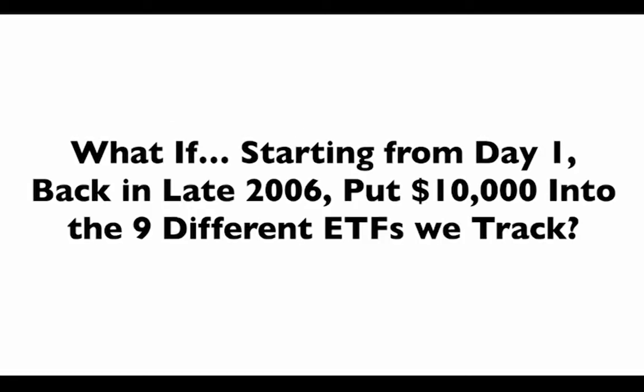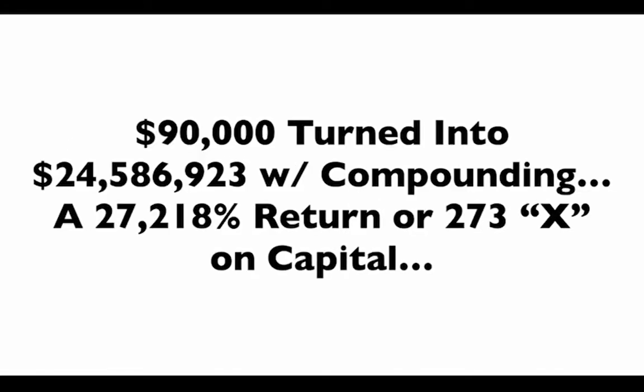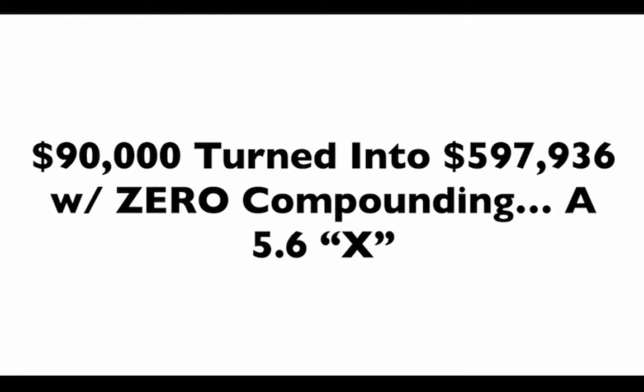Here's the result. Going back to late 2006 when we launched this system, if you put $10,000 into each of the nine different ETFs — DIA, SPY, QQQ, Gold, Materials, Oil — that's $90,000 total. With compounding, $90,000 would have turned into $24.5 million, a 27,000% return or 273X on capital. Even without compounding, the $90,000 would have turned into nearly $600,000 — a 5.6X return.